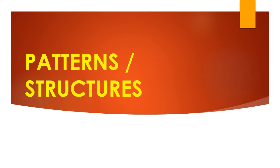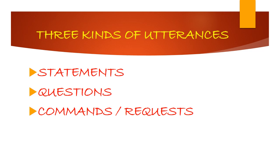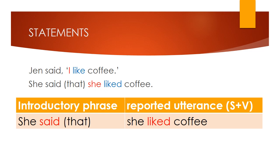Now let's continue with the patterns or structures of reported speech. There are three kinds of utterances: statements, questions, and commands or requests. Statements — look at the example: Jen said 'I like coffee.' In reported speech it becomes: she said that she liked coffee. There are two parts: the introductory phrase 'she said,' and the reported utterance. The reported utterance must be in the form of subject plus verb — in this case, 'she liked coffee.'